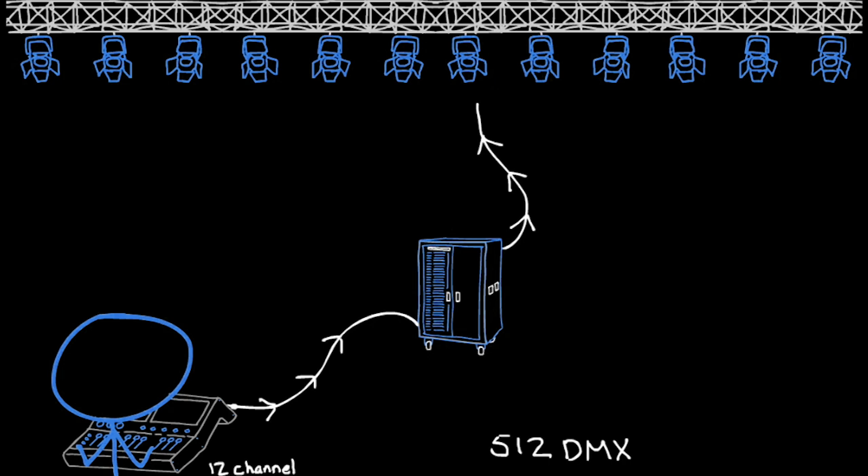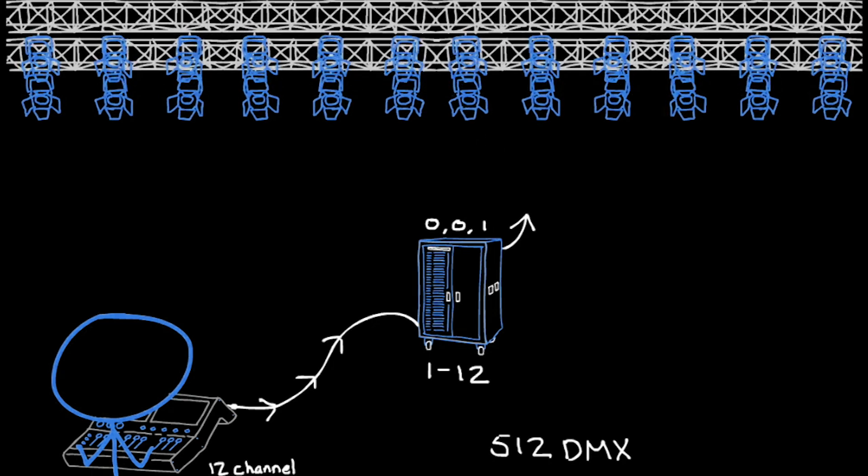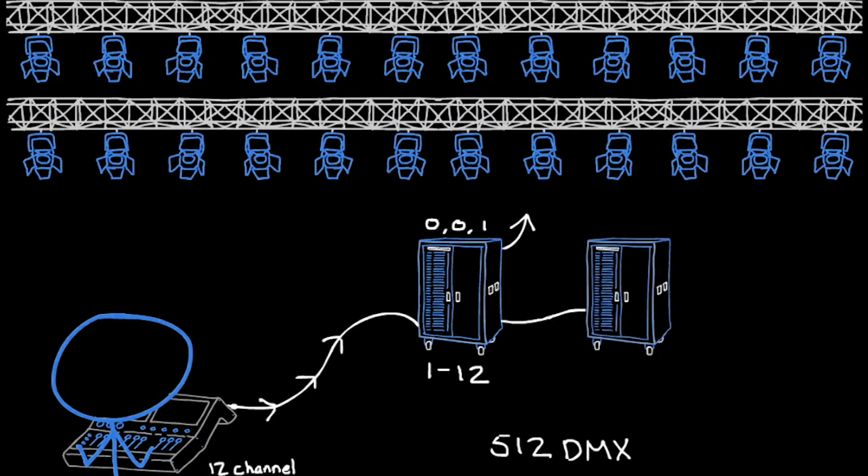The dimmer will have a digital thumbwheel. We dial that at 001, meaning dimmers 1 through 12. Let's say the theater increases their budget and buys 12 more lamps. They need to buy another dimmer. Well, if this dimmer is 1 to 12, this dimmer would be 13 through 24.